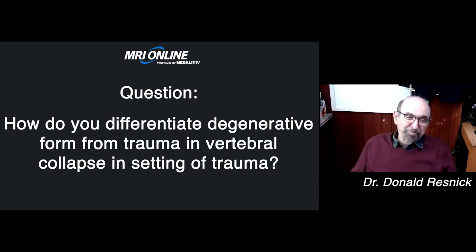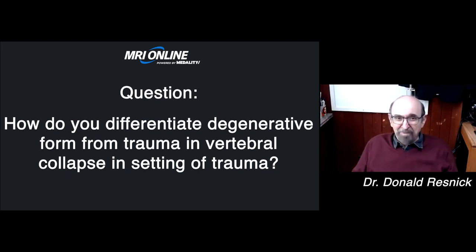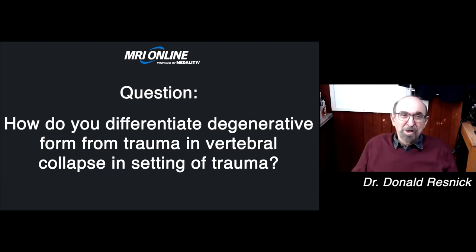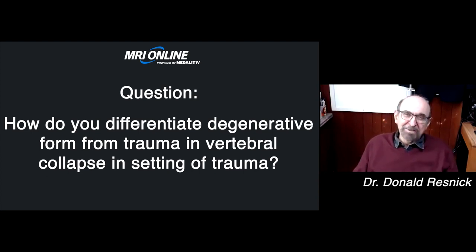One of my interests has always been what produces Schmorl's nodes or cartilaginous nodes. Probably one of the most common causes relates to microtrauma occurring at the discovertebral junction, allowing disc material to enter the vertebral body. That's why I suggested perhaps the Anderson lesions we see in ankylosing spondylitis might be explained by Schmorl's nodes, particularly if you have facet disease, an unstable spine, and abnormal motion at the discovertebral junction. I don't think collapsed vertebral bodies is something I think of very often with any of the conditions we spoke about today, degenerative or inflammatory in nature.